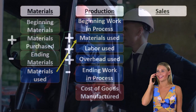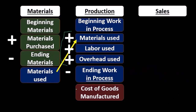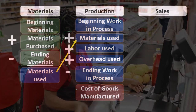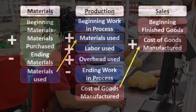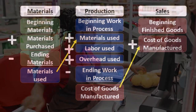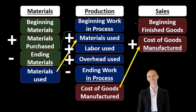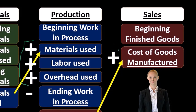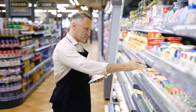Our bottom-line number here is cost of goods manufactured — not to be confused with cost of goods sold. Cost of goods manufactured is what we made during this time period; cost of goods sold is what we actually sold during this time period. Cost of goods manufactured will be used in the calculation for cost of goods sold, which starts with beginning finished goods inventory. We add to it the cost of goods manufactured, instead of purchases as we would for a merchandiser.